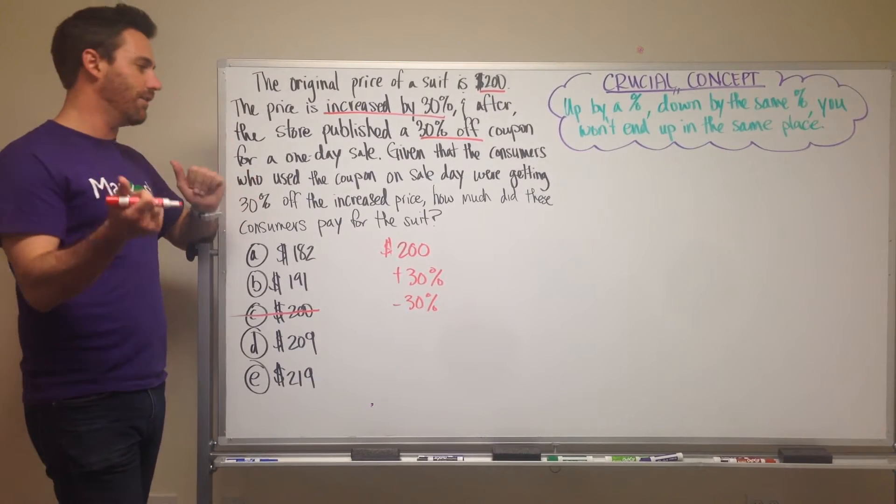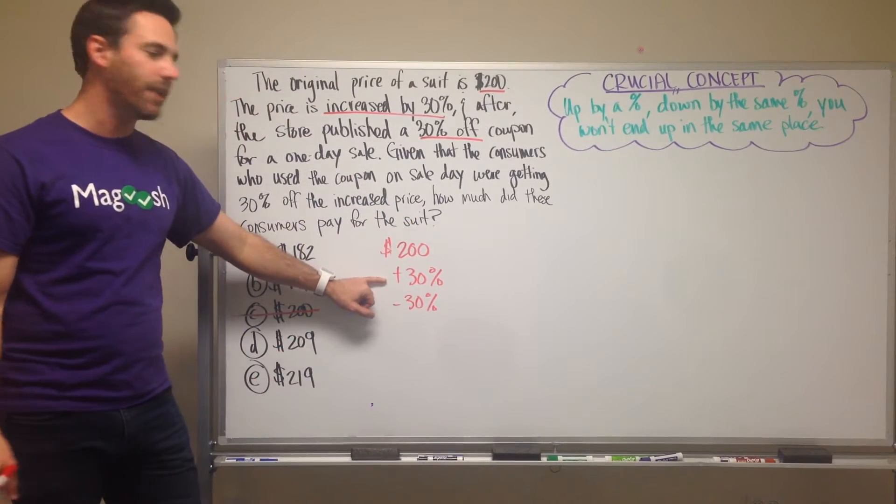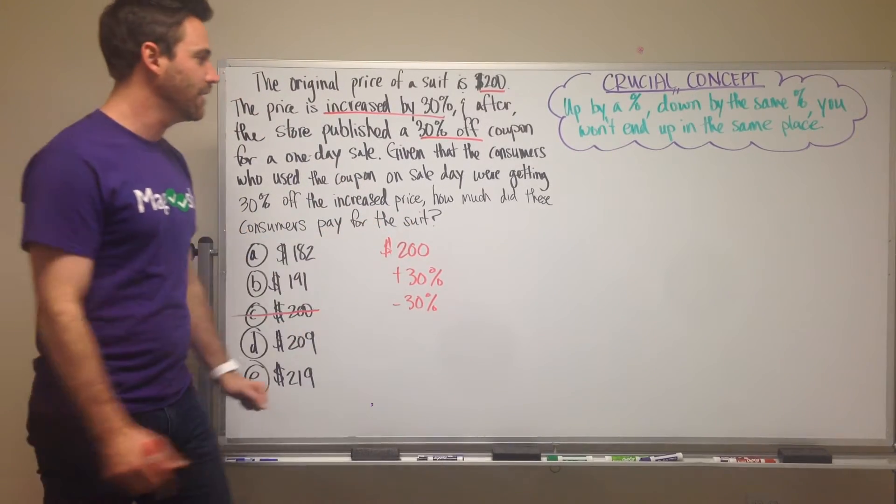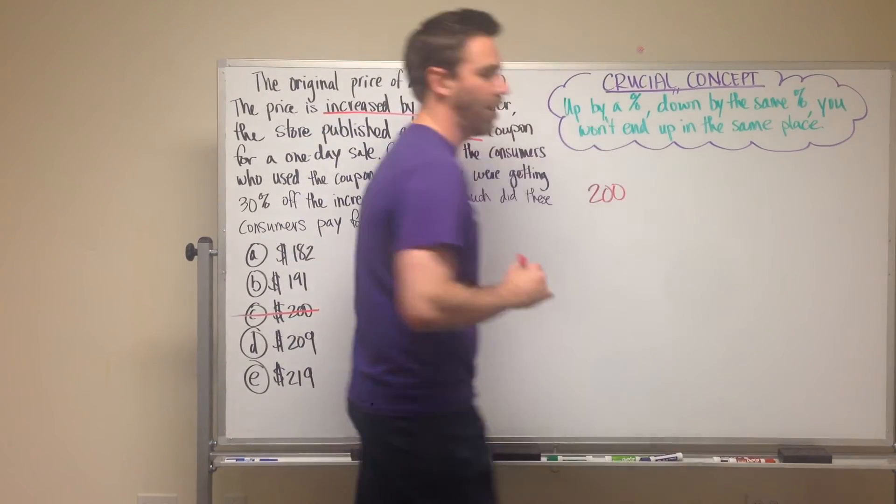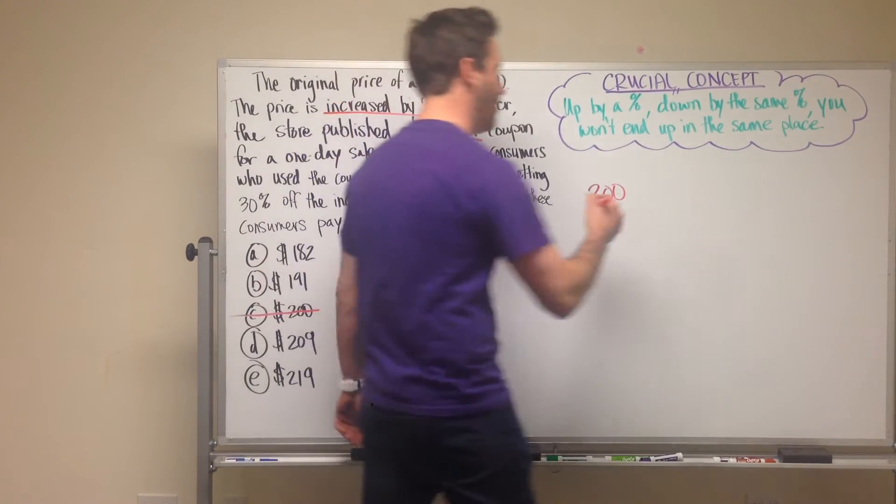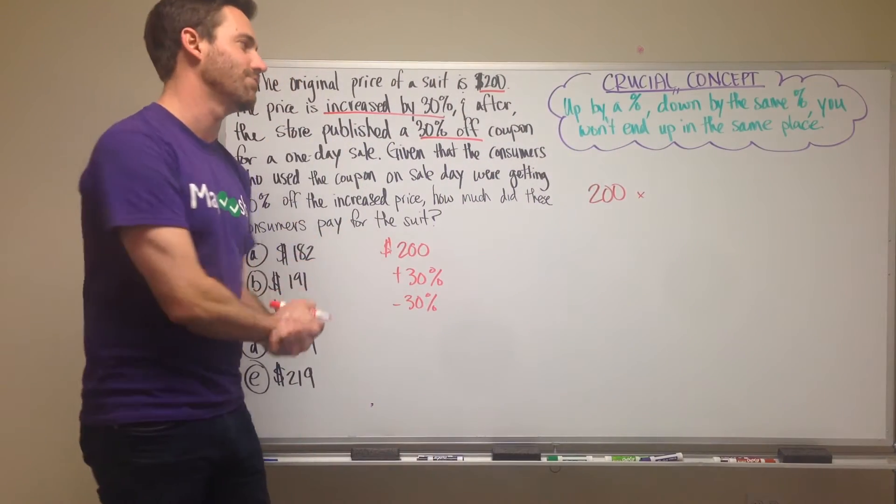So let's find out what the actual answer would be. First I'm going to do the first part here, add 30%. So the way that we do that is we take our $200 and we find out what is 30% of $200, and I'm going to add that to $200.